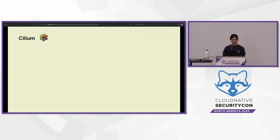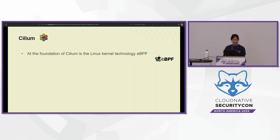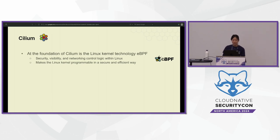So what is Cilium? At its core, Cilium is built around a Linux kernel technology called eBPF, which stands for Extended Berkeley Packet Filter. It's been shipped with the Linux kernel since around version 4.19, and it allows you to have security, visibility, and networking control within the Linux kernel. It makes the kernel programmable — a lot of people describe it as the equivalent of JavaScript for the browser — giving you the ability to run programs within your kernel.